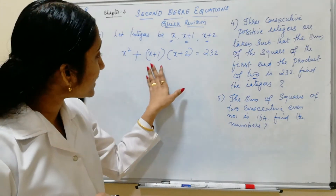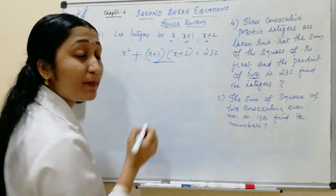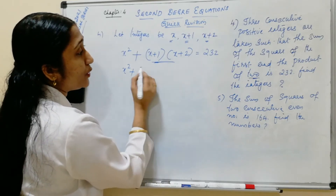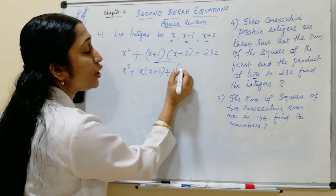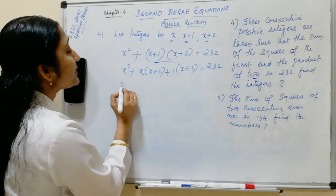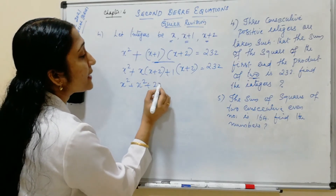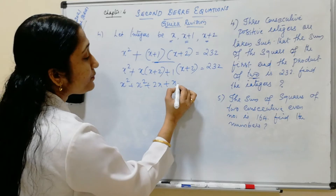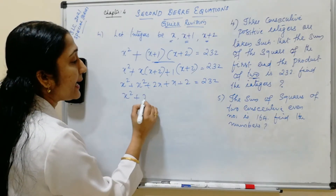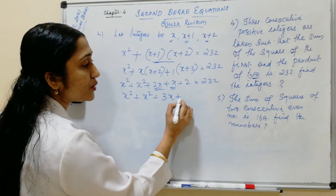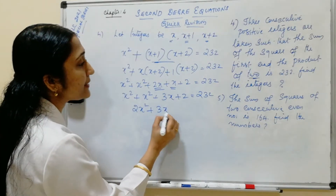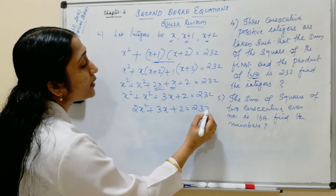So x squared plus (x+1)(x+2). Expanding: x squared plus x(x+2) plus 1(x+2), which gives x squared plus x squared plus 2x plus x plus 2 equals 232. Combining: 2x squared plus 3x plus 2 equals 232.